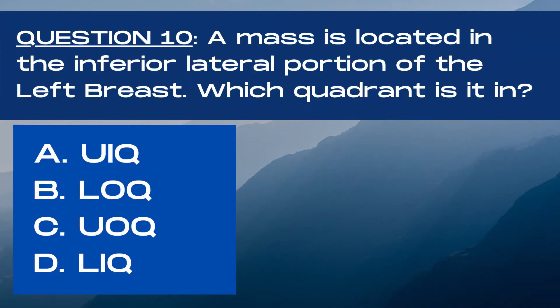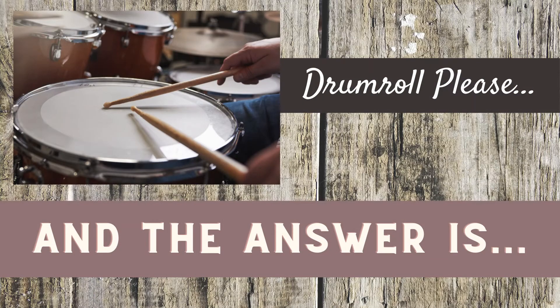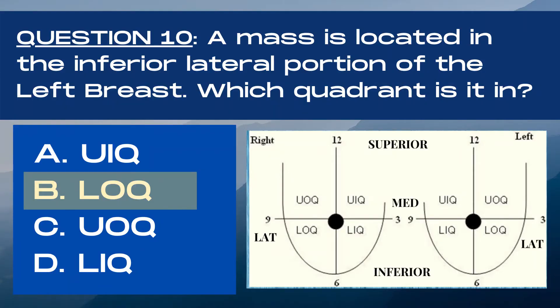Question 10. A mass is located in the inferior lateral portion of the left breast. Which quadrant is it in? A upper inner quadrant, B lower outer quadrant, C upper outer quadrant, or D lower inner quadrant? The answer is B, lower outer quadrant. In the left breast, the inferior and lateral sections triangulate to the lower outer quadrant of the breast.